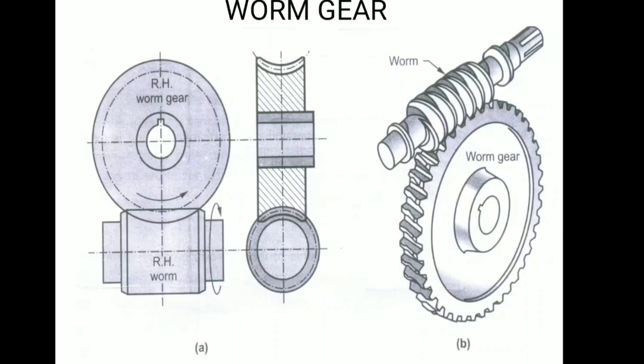This will be the third type, that is non-intersecting perpendicular shaft axis. You can see, the axis of the worm as well as, this is worm and this is gear, it is non-intersecting but perpendicular to each other. Likewise, we are going to design under this criteria.